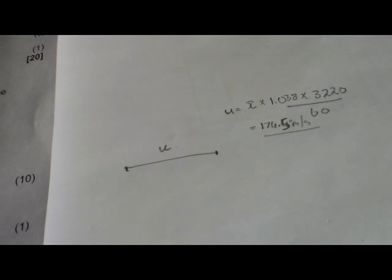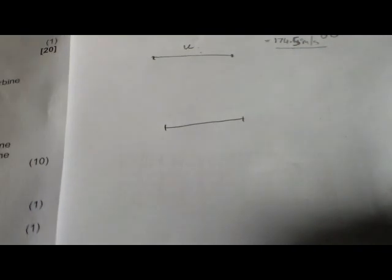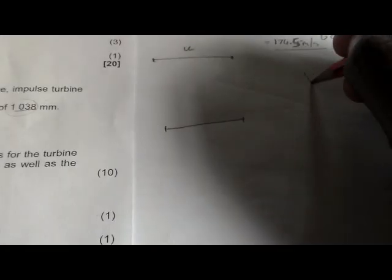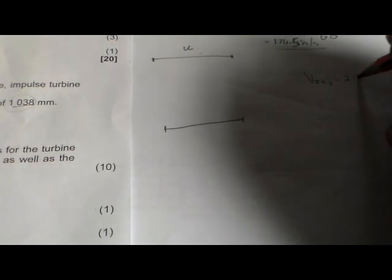We're going to measure our initial velocity and divide it by our scale. Our scale is 1 centimeter equals 50 meters per second, so divide by 50 to get the length. On the second stage, we are only given the relative velocity of 210 meters per second at the outlet, which is VRE2 = 210. So this 210 divided by 50 gives us 4.2 centimeters. This 4.2 centimeters will be this line, but we don't know the angle.